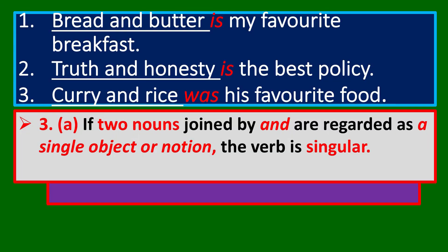Bread and water is my favorite breakfast. Truth and honesty is the best policy. Curry and rice was his favorite food. Here two nouns are joined by 'and,' but they are regarded as a single object — one item taken together. Bread and water together is one thing; curry and rice together is one thing. In that case, singular verbs are used — just like 5 rupees or 60 kilometers.